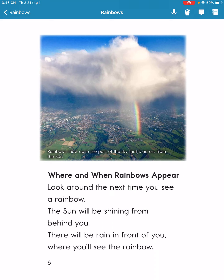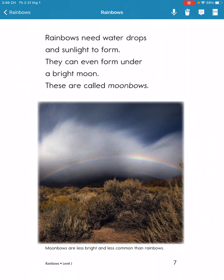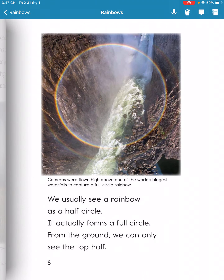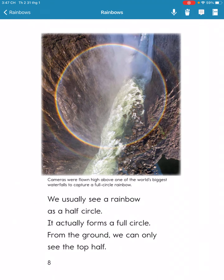There will be rain in front of you where you can see the rainbow. Rainbows need water drops and sunlight to form. They can even appear under a bright moon — these are called moonbows.